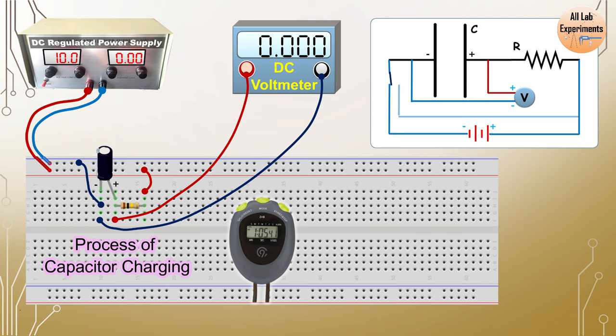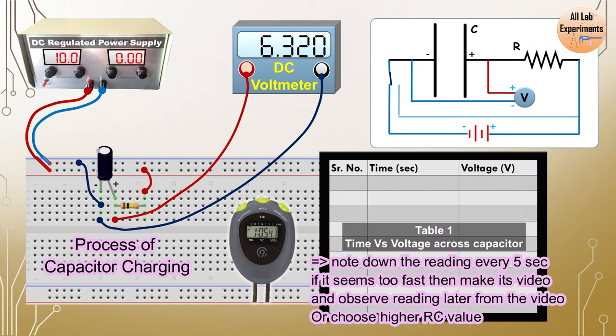So just the time you complete this circuit this capacitor will start charging and you can observe the voltage developed across this capacitor in this DC voltmeter. Now make the first table.